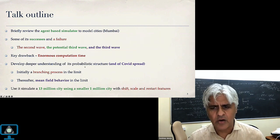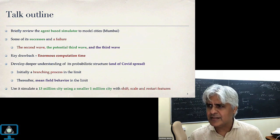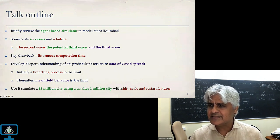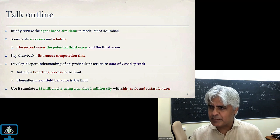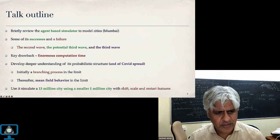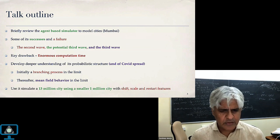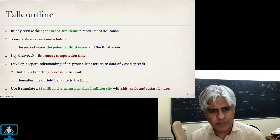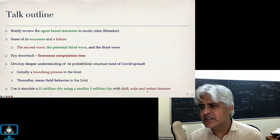We developed deeper understanding of the probabilistic structure of COVID spread and of the simulation model, realizing that initially it's a branching process — a person has a number of children, they have a number of children, and so on. The branching process also stabilizes in the sense that there's an intensity to each sample path, and given that intensity, it evolves deterministically with exponential growth. We'll discuss how to simulate a 13 million city like Mumbai using a 1 million city simulator, using shift, scale, and restart features.